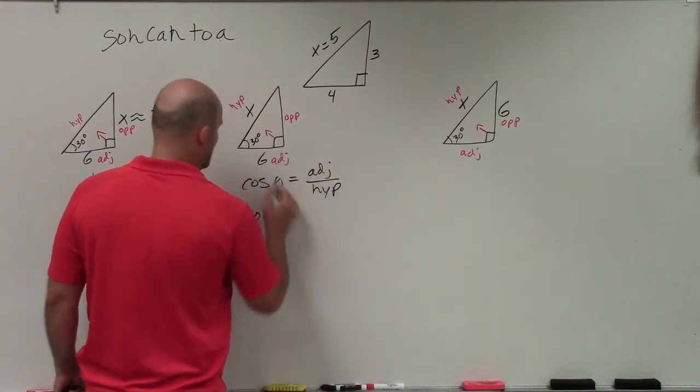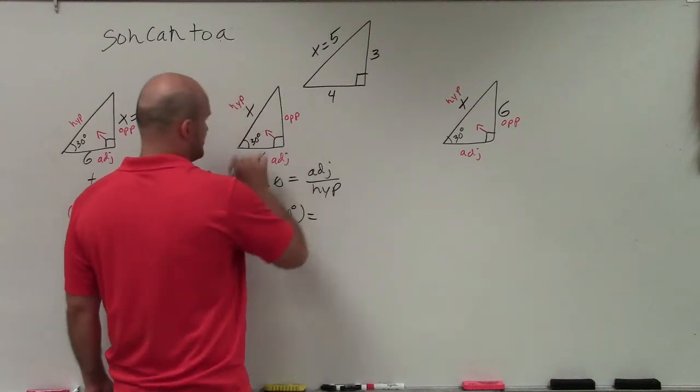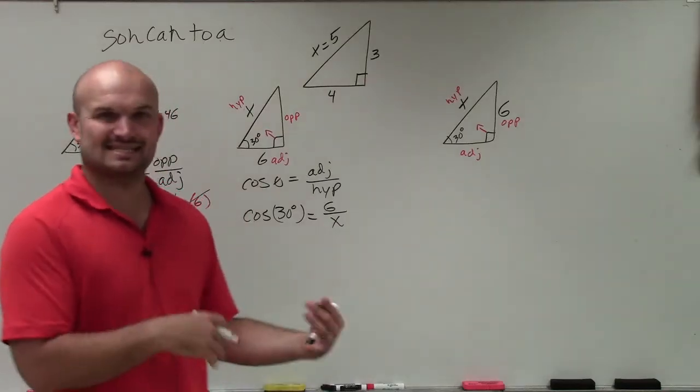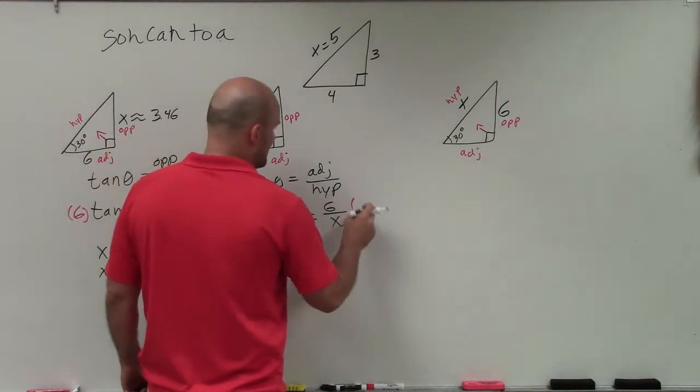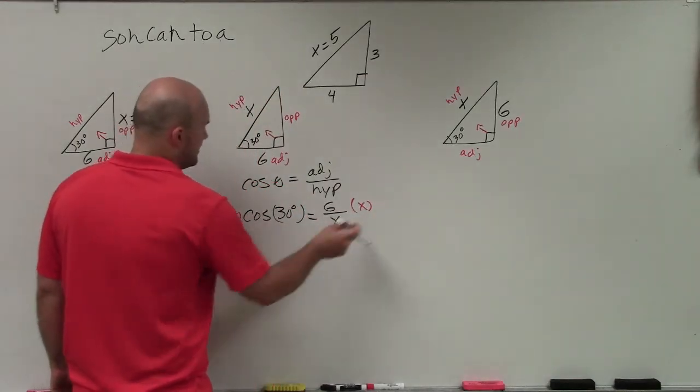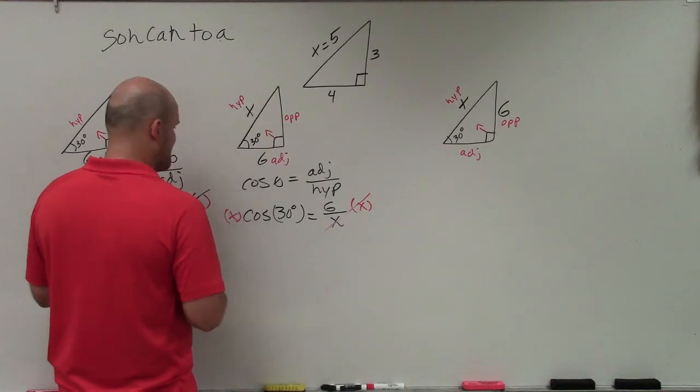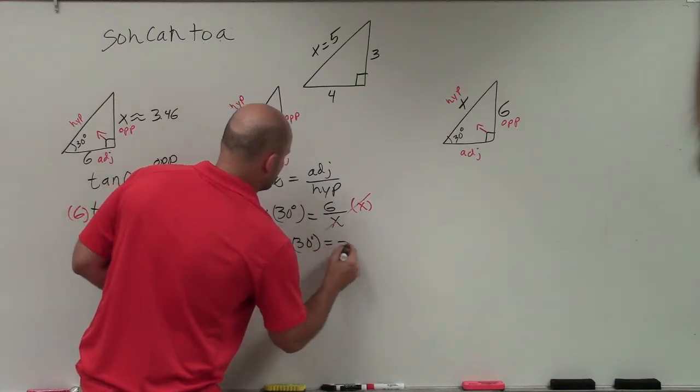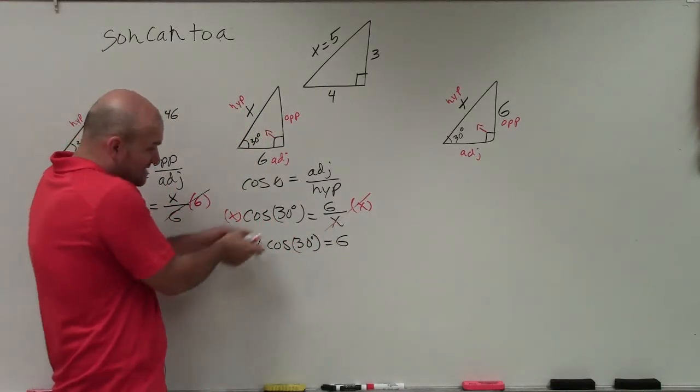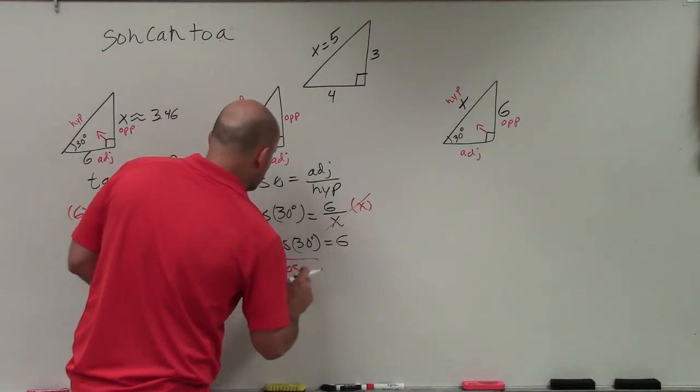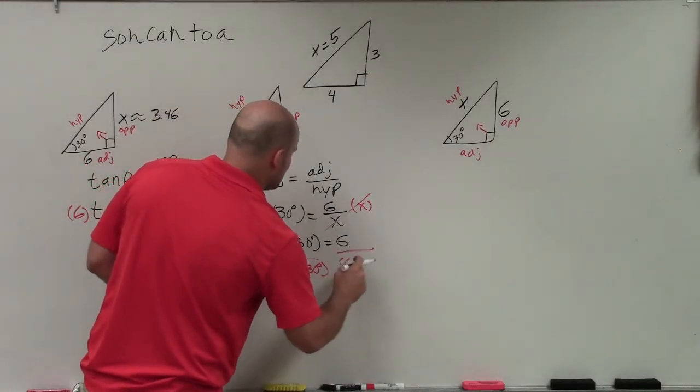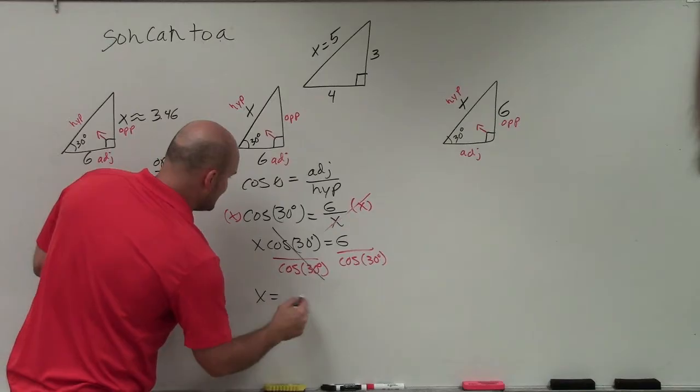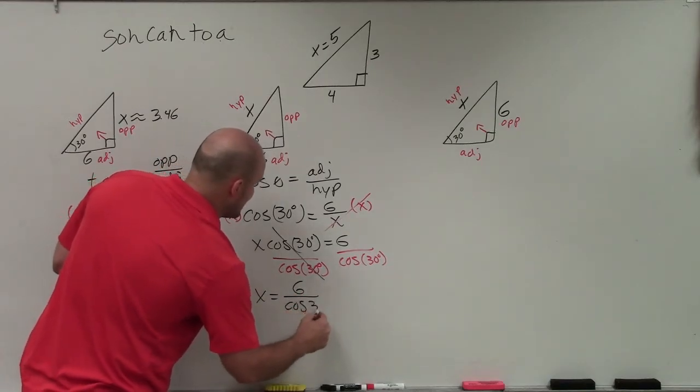I have cosine of 30 degrees is equal to my adjacent, which is my 6, over my hypotenuse. Now we have to solve for x. But the problem is x is in the denominator. Just like I got the 6 off the denominator here, I'm going to multiply by an x on both sides. Those x's divide to 1, and I'm left with x times cosine of 30 degrees is equal to 6. To solve for x, I see my x is being multiplied by cosine of 30 degrees, so I'm going to divide by cosine of 30 degrees on both sides. Those divide out and I'm left with x equals 6 divided by the cosine of 30 degrees.